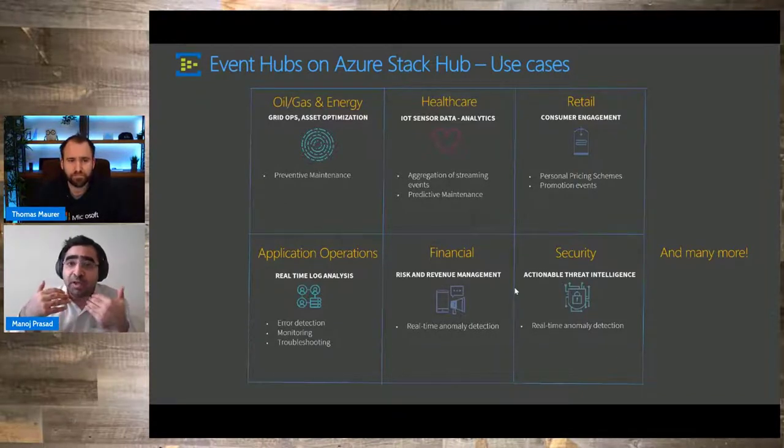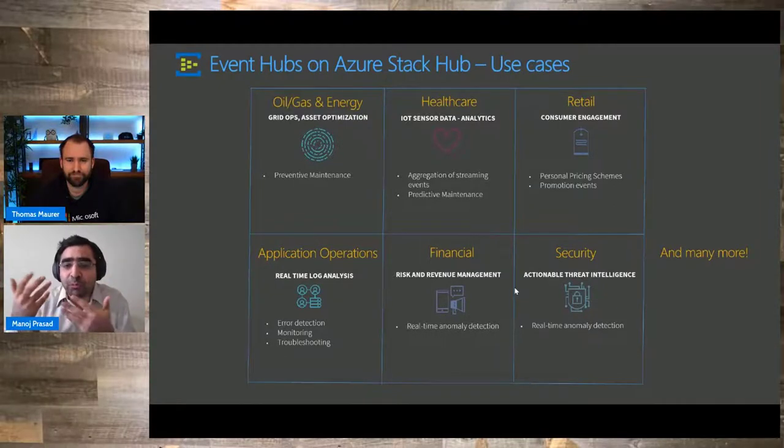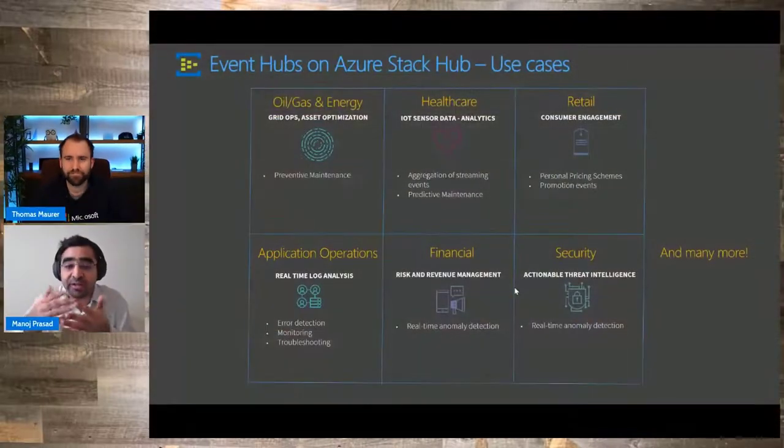Retail, for example — I'm offering something to consumers. How do I get feedback from consumers on whether they're happy with my offering? I'm doing promotional events and pricing schemes — how do I know if those are effective? How do I know that my consumers are always engaged? Event Hubs could help ingest that data, and you could always run insights to get that feedback. That's a great use case for retail.